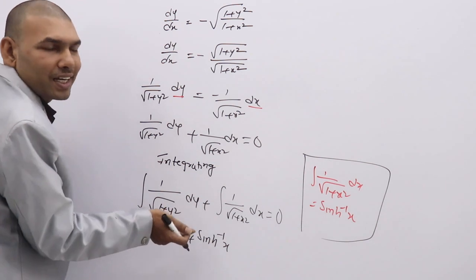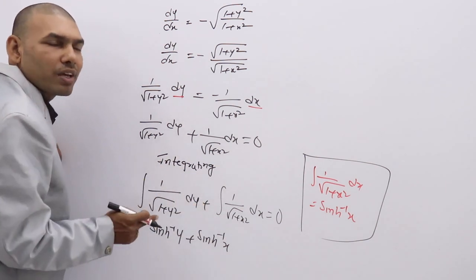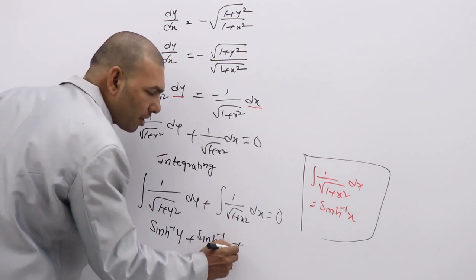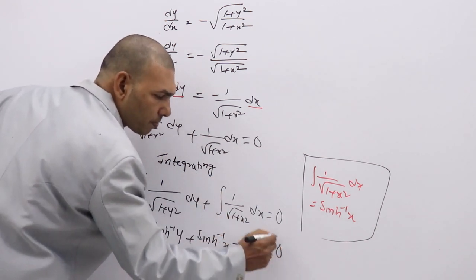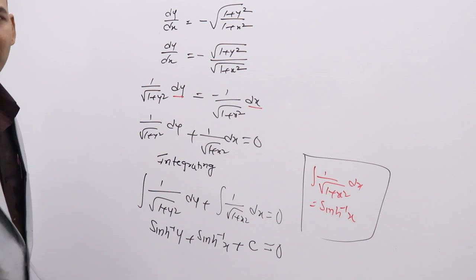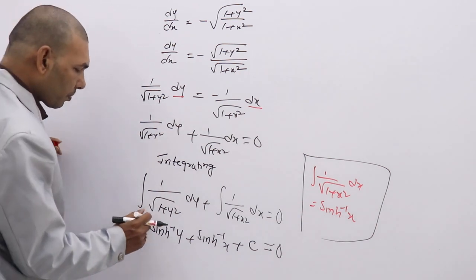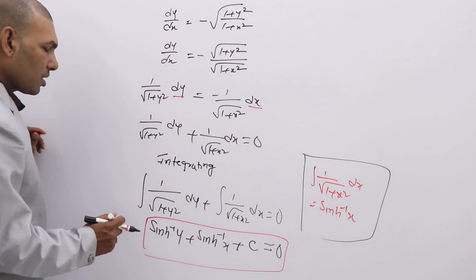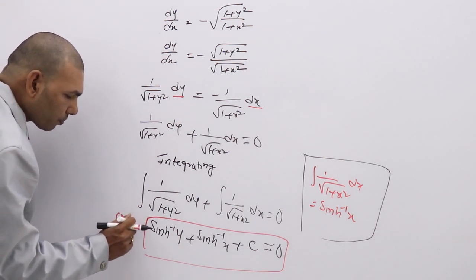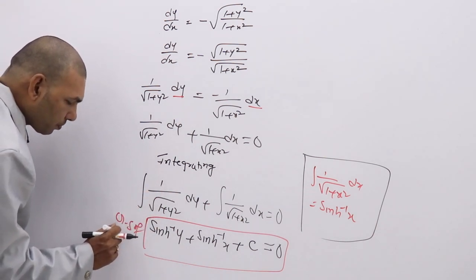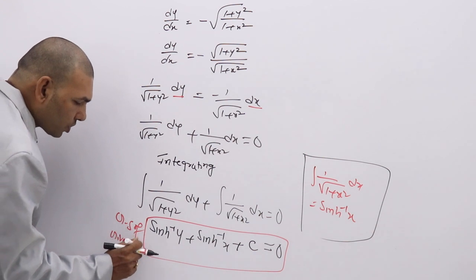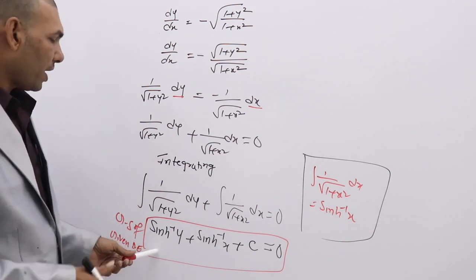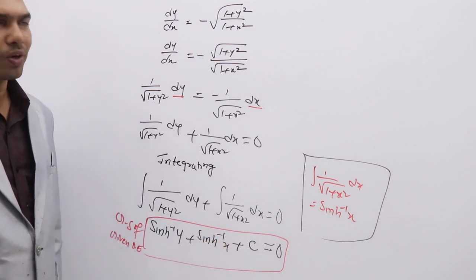Because this is indefinite integration — that means we don't have limits — whenever you integrate without limits, you need to add an arbitrary constant c. After integration, you have to add +c. So the general solution of the given differential equation is: sinh⁻¹y + sinh⁻¹x + c = 0.